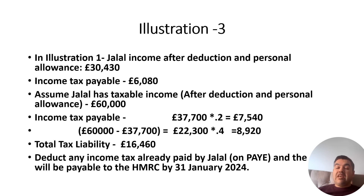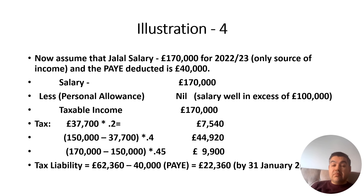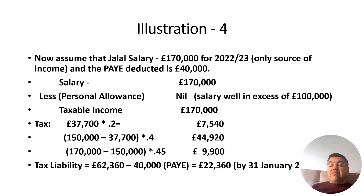Deduct any income tax already paid by Jalal through PAYE; the remaining balance will be payable to HMRC by 31st January 2024. Now assume Jalal's salary is £170,000 and PAYE deducted is £40,000. His salary is well in excess of £100,000 — if individual net income exceeds £125,000 he will not be entitled to any personal allowance at all. In the exam, don't waste time; just note that his income is £170,000, well in excess of £100,000, so he is not entitled to a personal allowance.